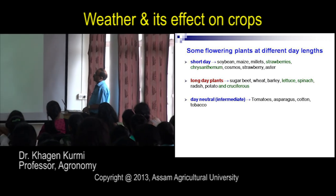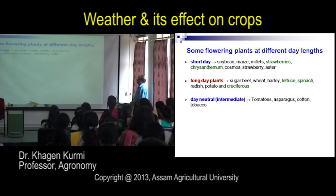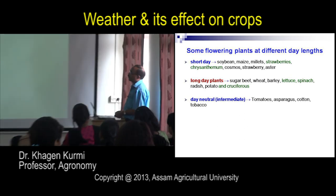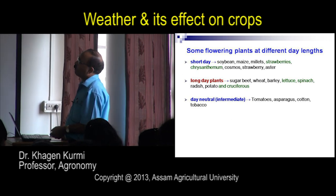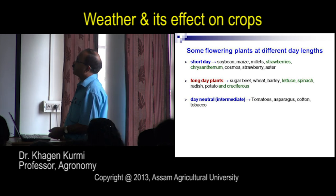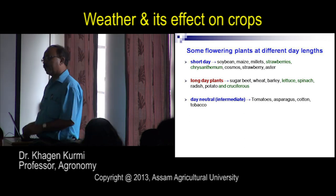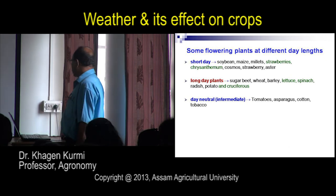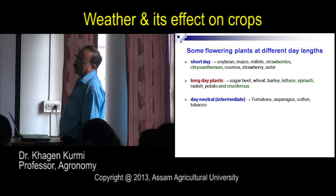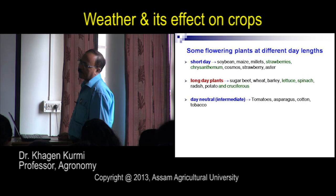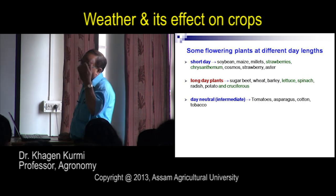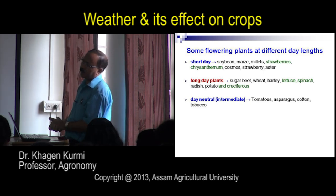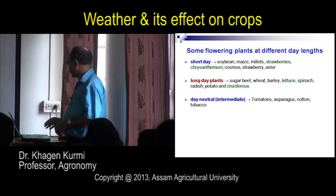Short day plants include soybean, maize, millet, strawberry, chrysanthemum, cosmos, and aster — to which rice should be added. Long day plants include wheat, sugar beet, barley, lettuce, spinach, radish, potato, and cruciferous (Brassica family) crops — all Brassica family plants are long day plants, coming into flower in February or March when day length is increasing. Day-neutral plants include sunflower, tomato, asparagus, cotton, and tobacco — they can be grown round the year provided temperature is within the cardinal points.